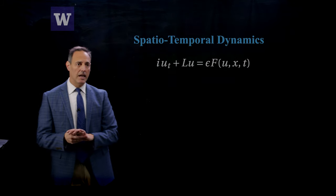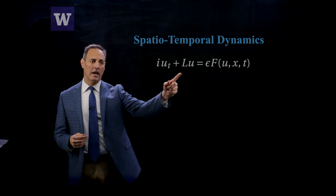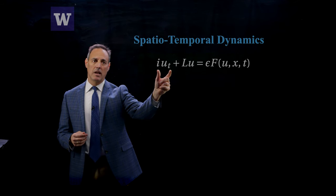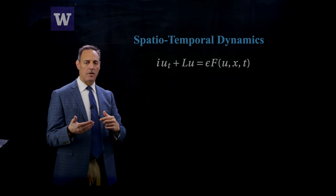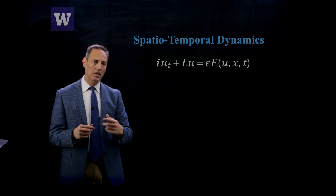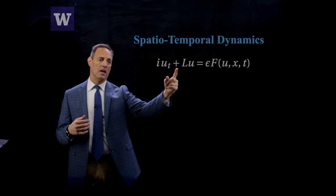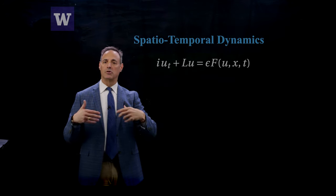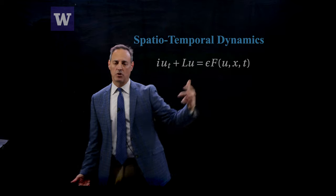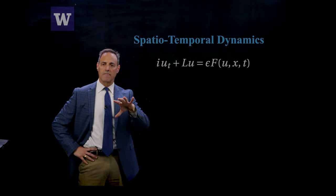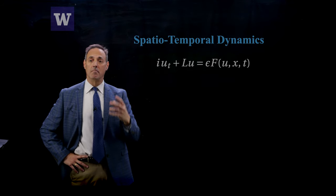I'm going to consider some spatial-temporal dynamical system: i∂U/∂t = LU, where L is some linear operator. I'm putting an i in front explicitly because this form is exactly what you get in optics and quantum mechanics, where you have oscillatory fields. I want to look for eigenfunctions of the operator L, specifically solutions that are time-periodic.